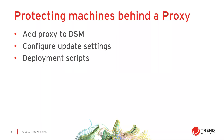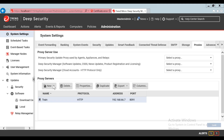To protect computers that require a proxy to access the internet, the Deep Security Manager, or relays, you need to configure the Deep Security Manager with the proxy server's address. Under Administration and then System Settings, I'll configure the proxy address.